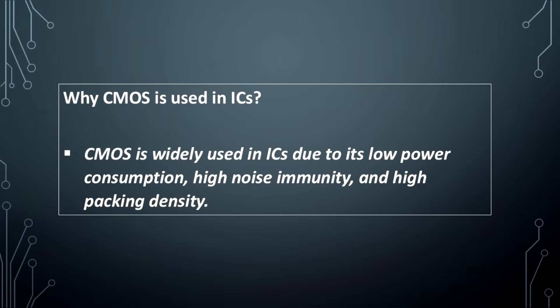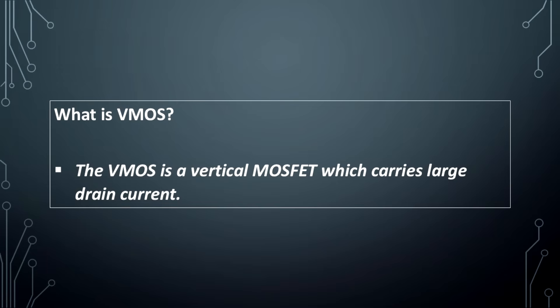Why is CMOS used in ICs? CMOS is widely used in ICs due to its low power consumption, high noise immunity and high packing density.